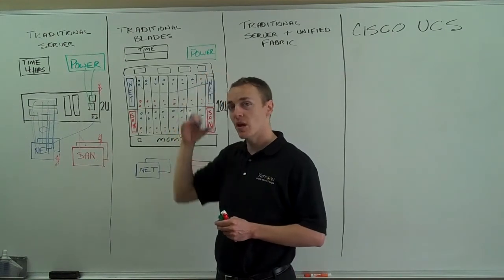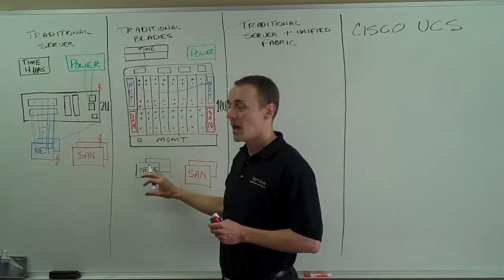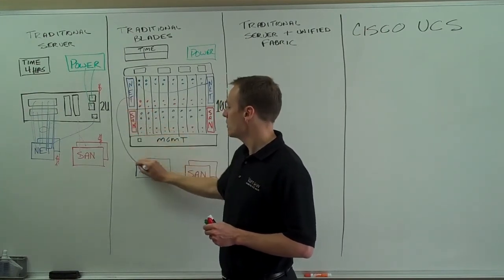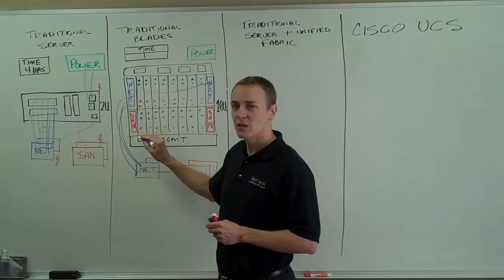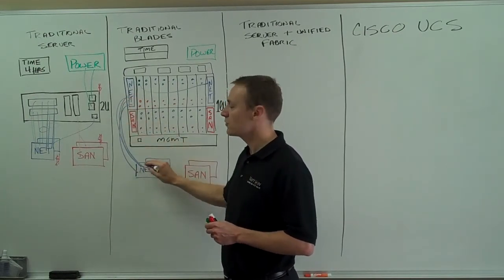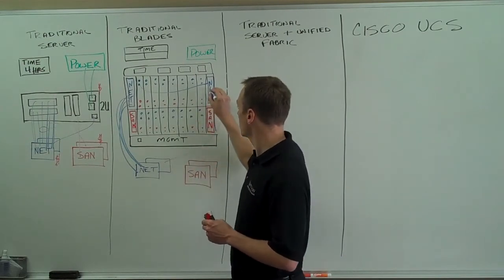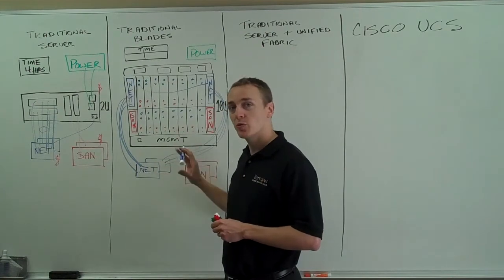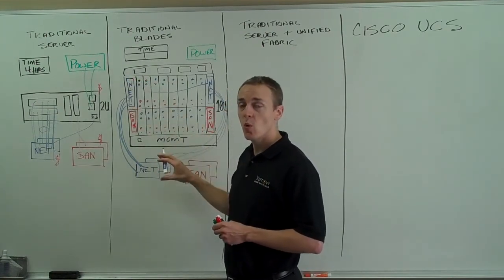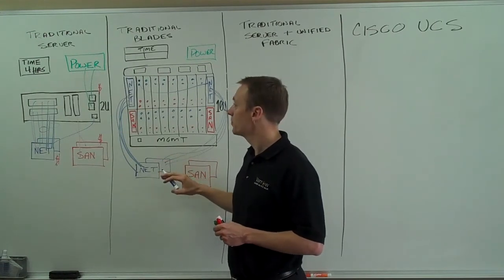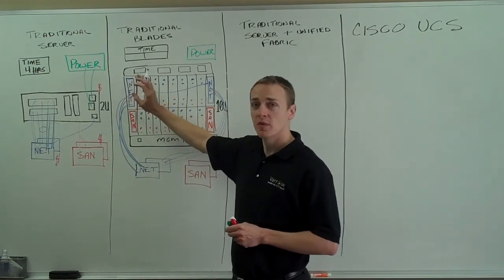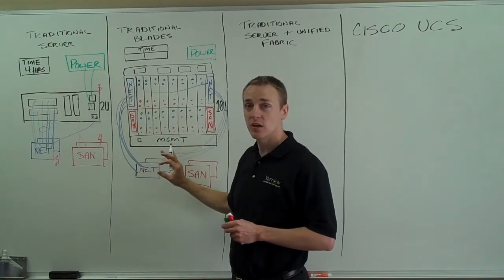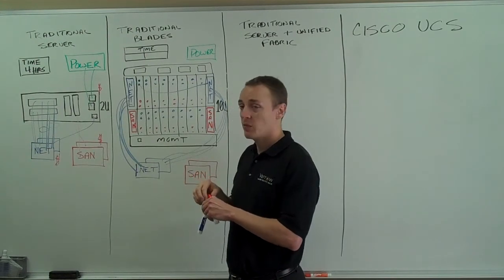Here's the part we have to be concerned about: how do we connect that network back into my aggregation layer, access layer, or core? You're usually going to do that through some sort of EtherChannel mechanism. I might connect 4 here and 4 here, giving me a total of 8 gigs of throughput into this chassis. More throughput would mean I need 10 gig switches or more 1 gig ports. So from the blade to the internal switch, out to the external switch — that's how we consume network.